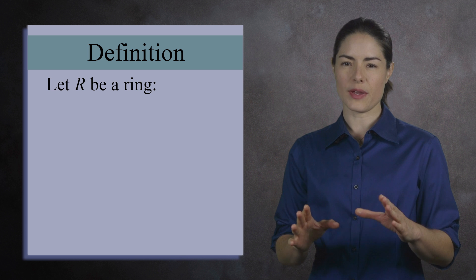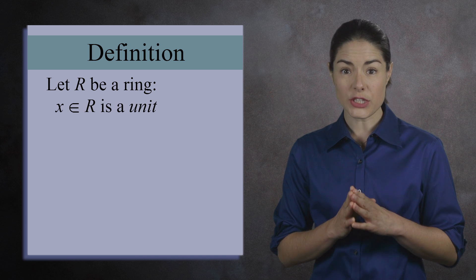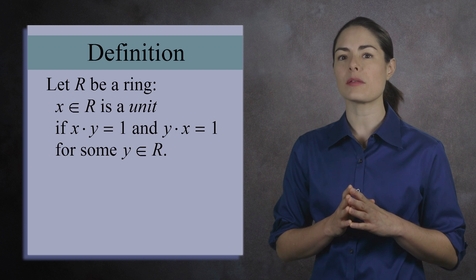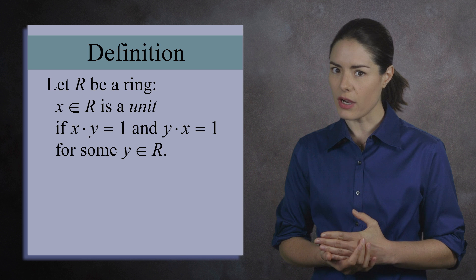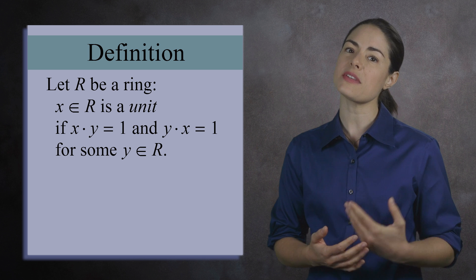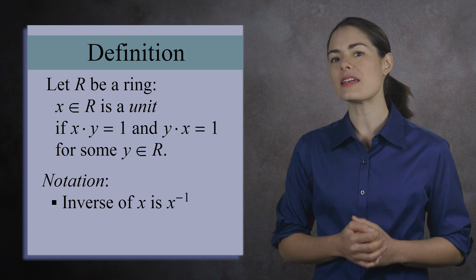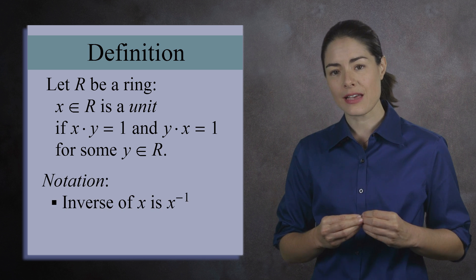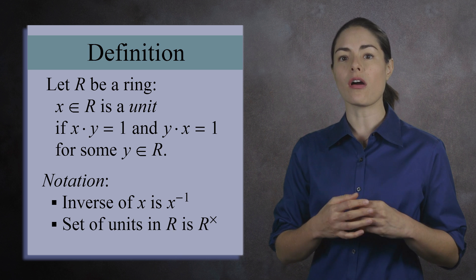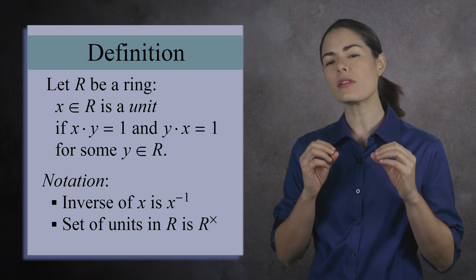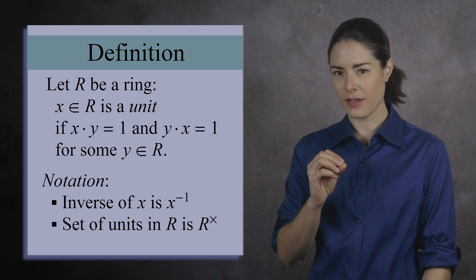Let R be a ring. An element x is called a unit if there is an element y where x times y equals 1 and y times x equals 1. This is the notation for the inverse of x. The set of all units for the ring R is written with a little multiplication symbol up above.